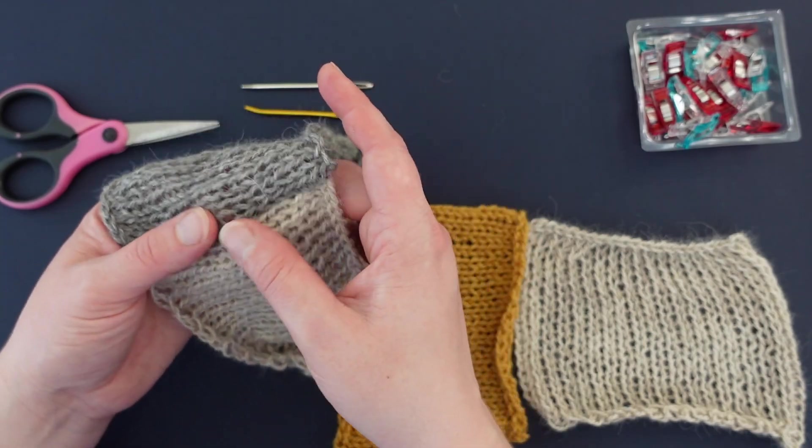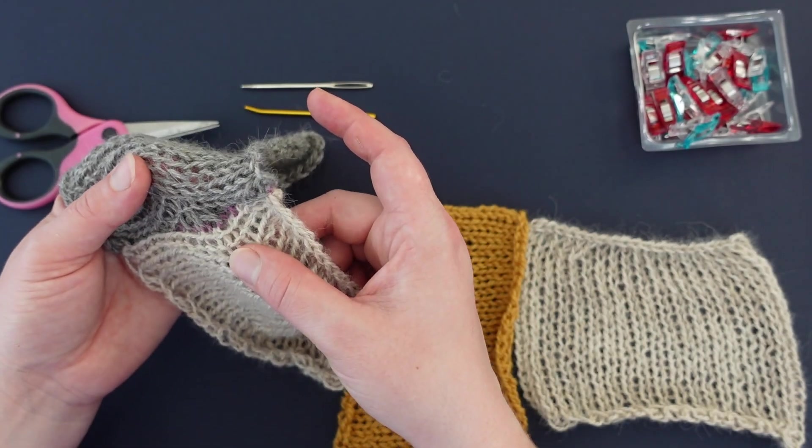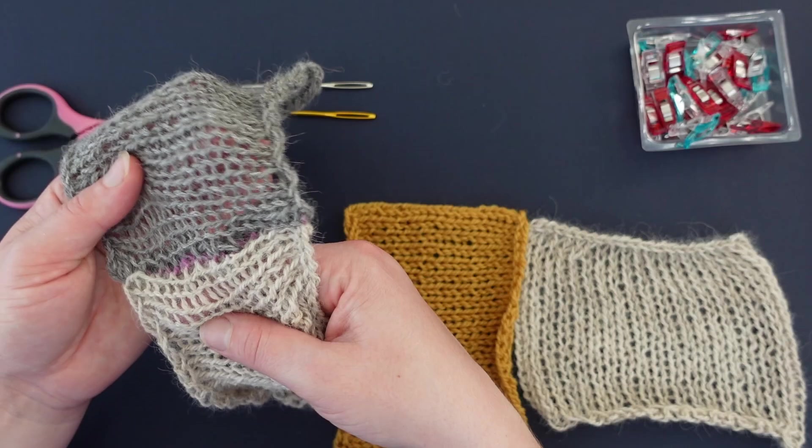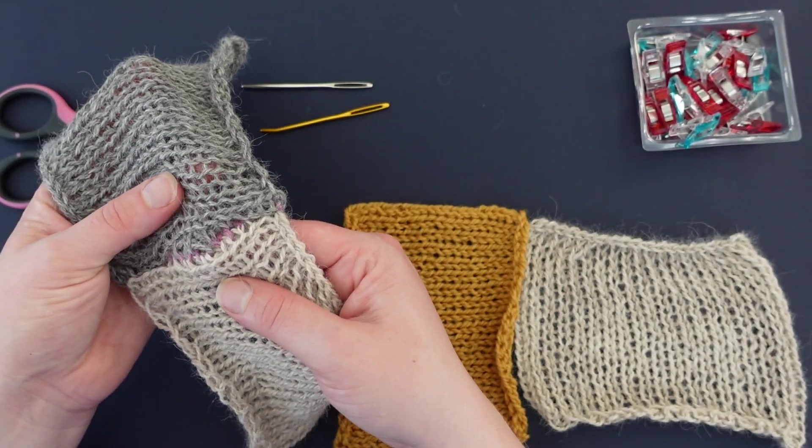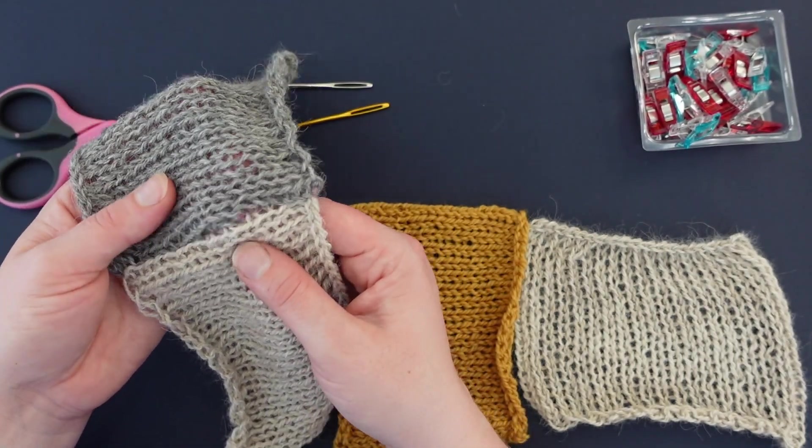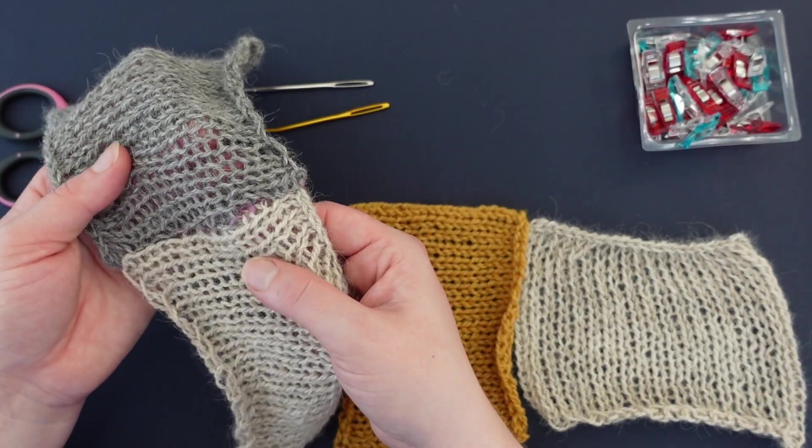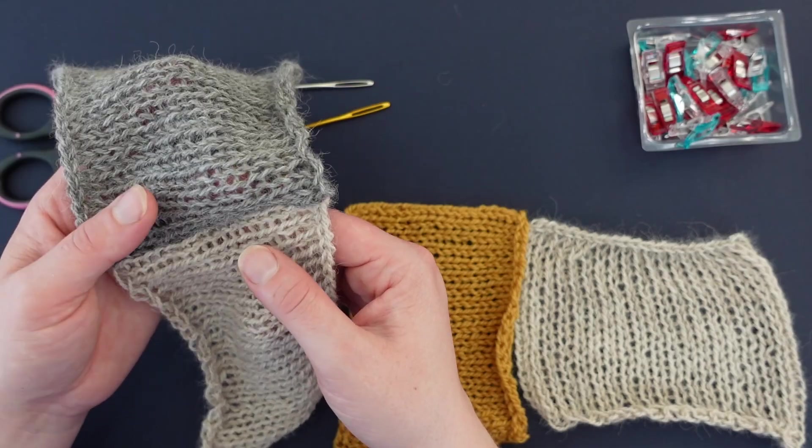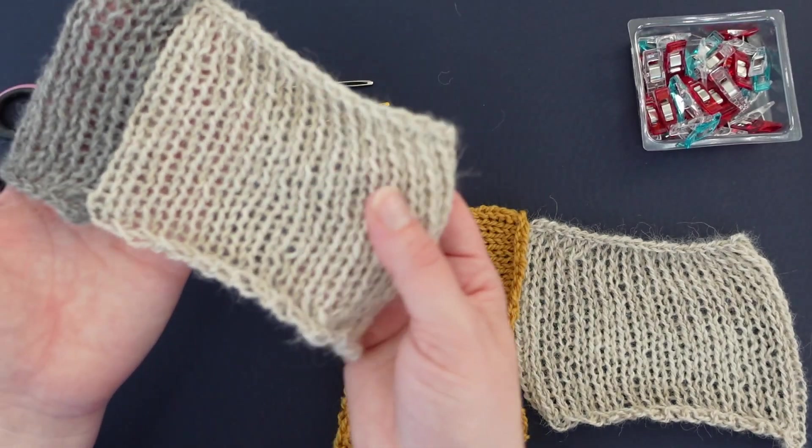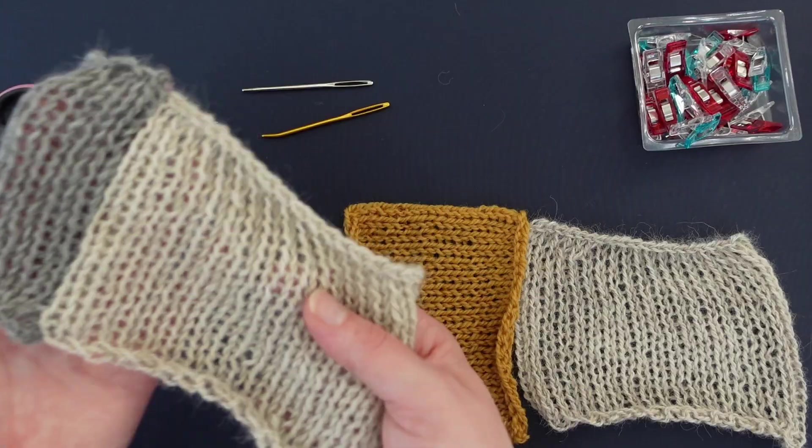It's a sturdy seam. It still has a little bit of elasticity. It's mostly invisible if it's not stretched too hard. I used a contrasting yarn here so that you could see what I was doing, but typically once you're using a coordinating yarn that's going to be mostly invisible 99% of the time. So it's a really nice, really professional smooth way to seam your garment.